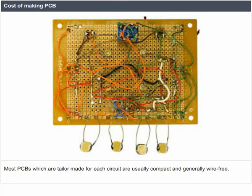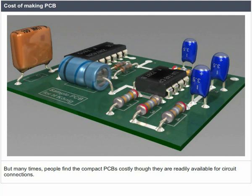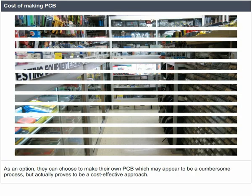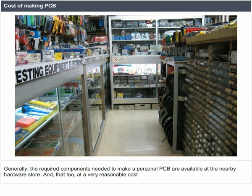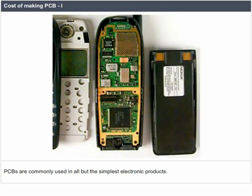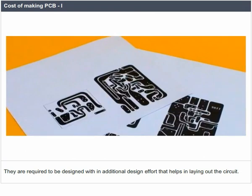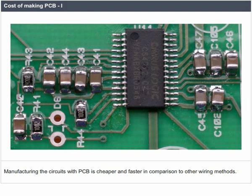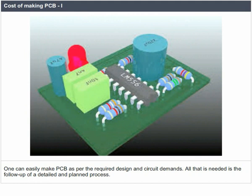Cost of making PCB: most PCBs, which are tailor-made for each circuit, are usually compact and generally wire-free. Many people find compact PCBs costly, though they are readily available. As an option, they can choose to make their own PCB, which may appear cumbersome but actually proves to be cost-effective. The required components are available at nearby hardware stores at very reasonable cost. Manufacturing circuits with PCB is cheaper and faster compared to other wiring methods.